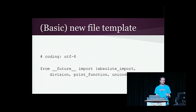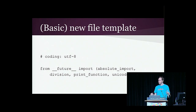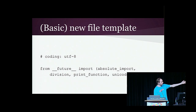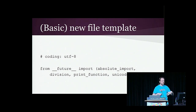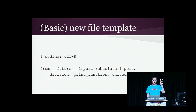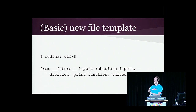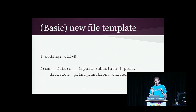A common complaint is the boilerplate needed when supporting Python 2 and 3. The coding line is totally optional — Python 3 supports UTF-8 by default. But the future import line, for absolute import, division, print function, and unicode literals, is important to get you used to things that have become very common in Python 3. I hear people complain about this — it's two lines of boilerplate. Anyone who has written Java should be laughing right now. And once you're only on Python 3, you can delete those lines.